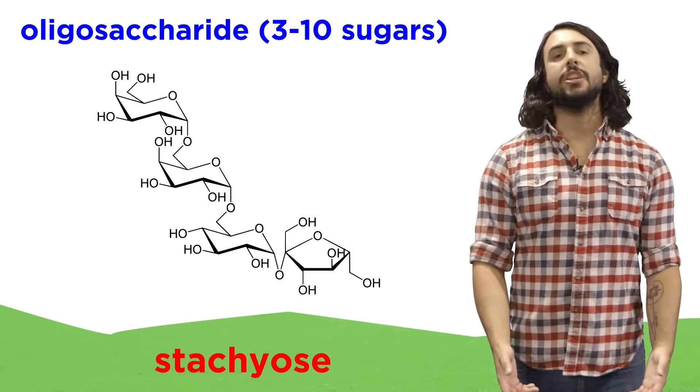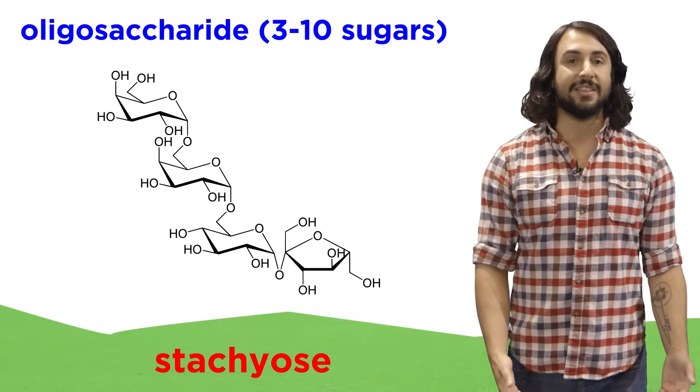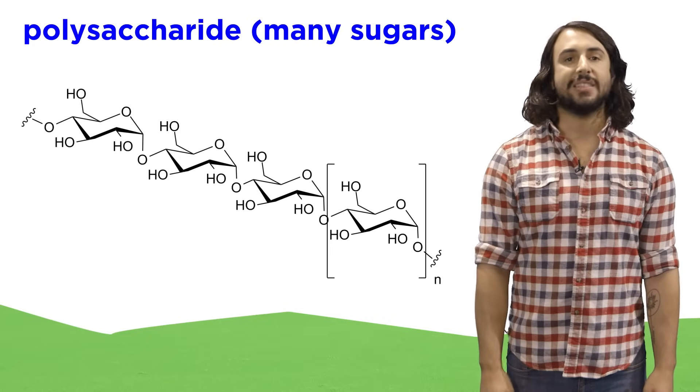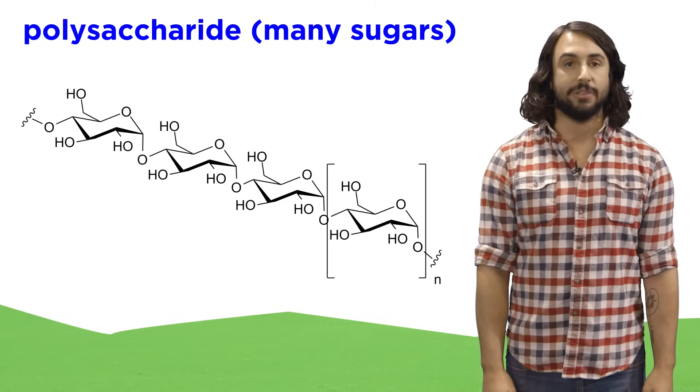We could continue to polymerize further, making an oligosaccharide, which will have three to ten saccharide units, or a polysaccharide. Polysaccharides can have thousands of monomeric units, and nature uses these quite frequently.